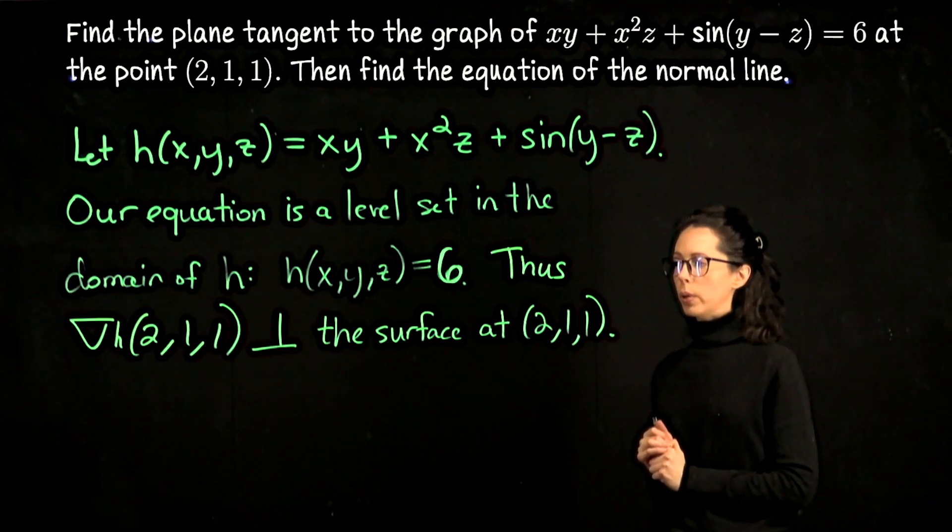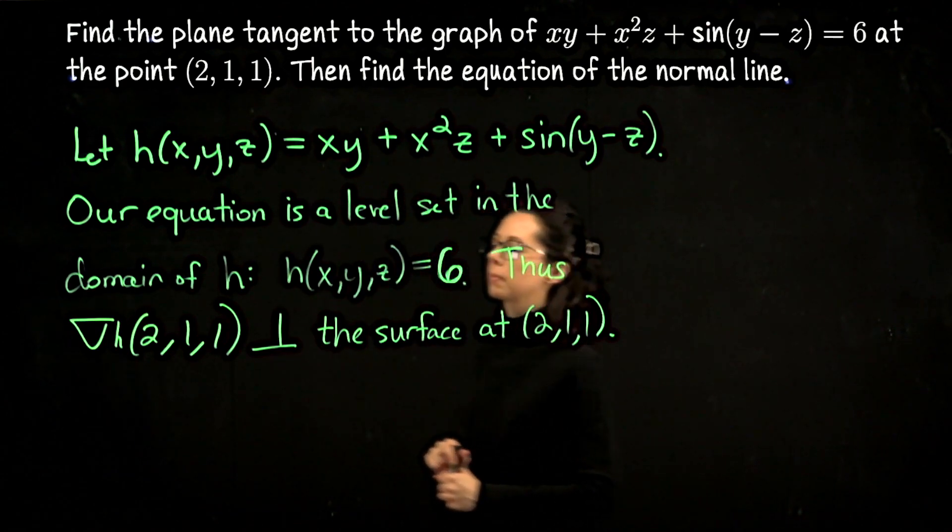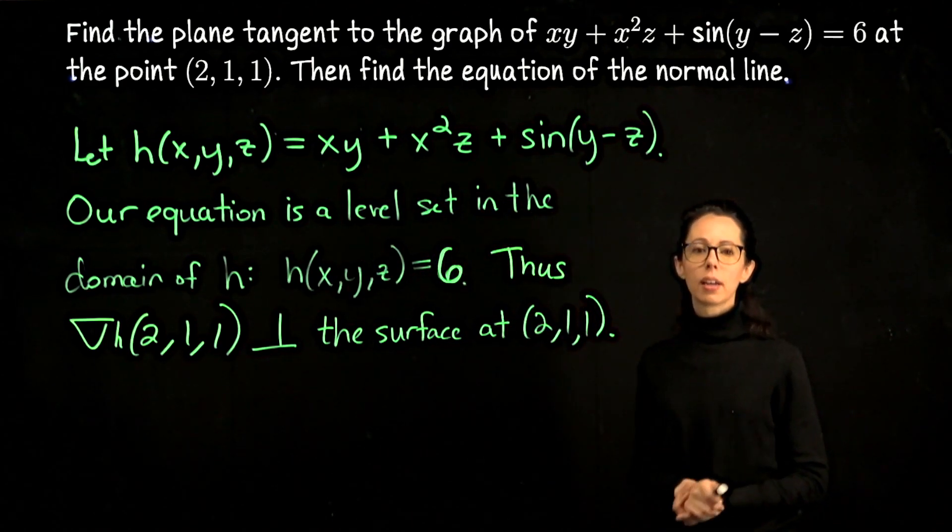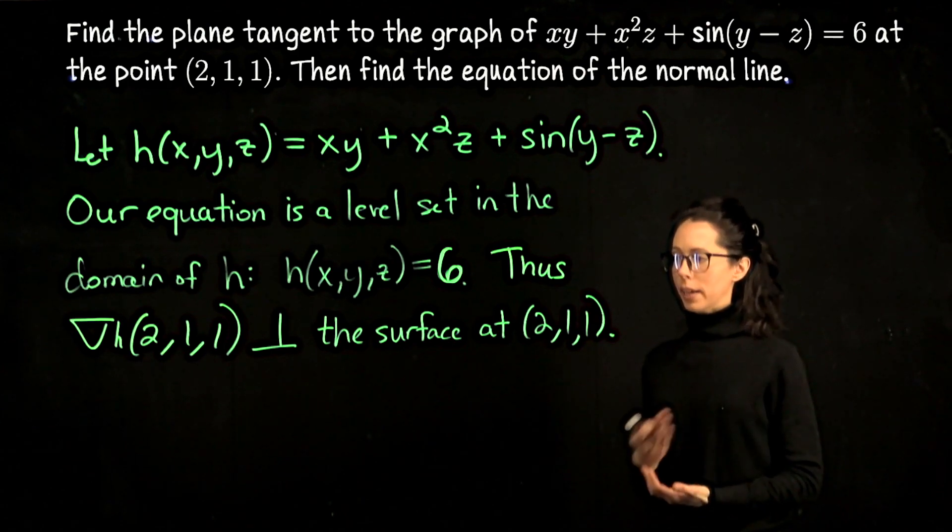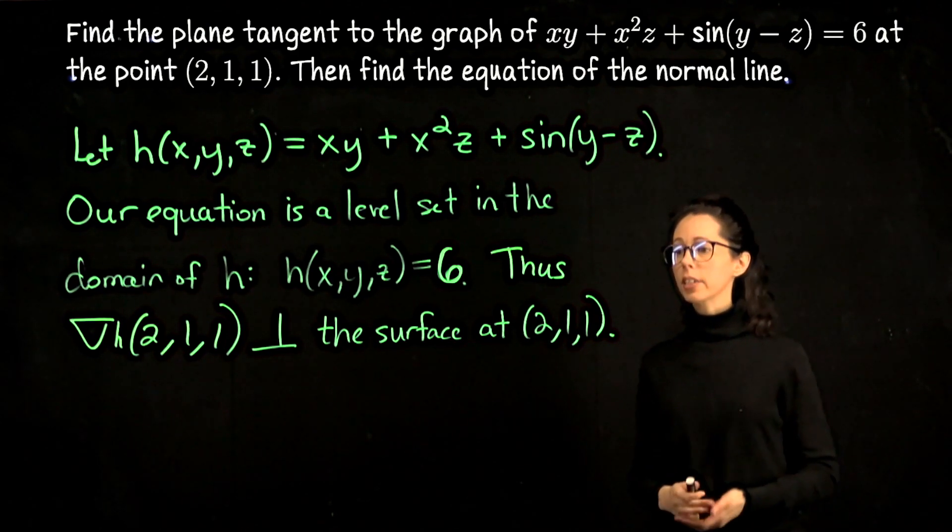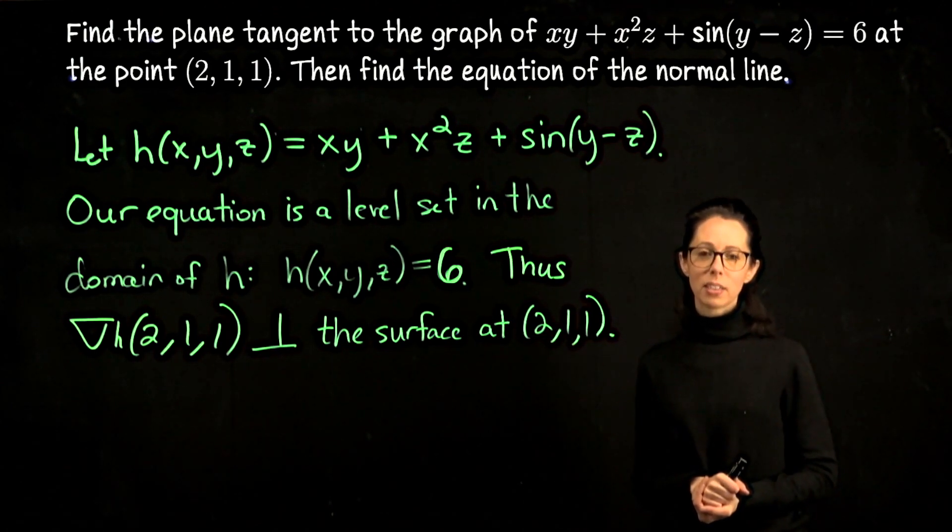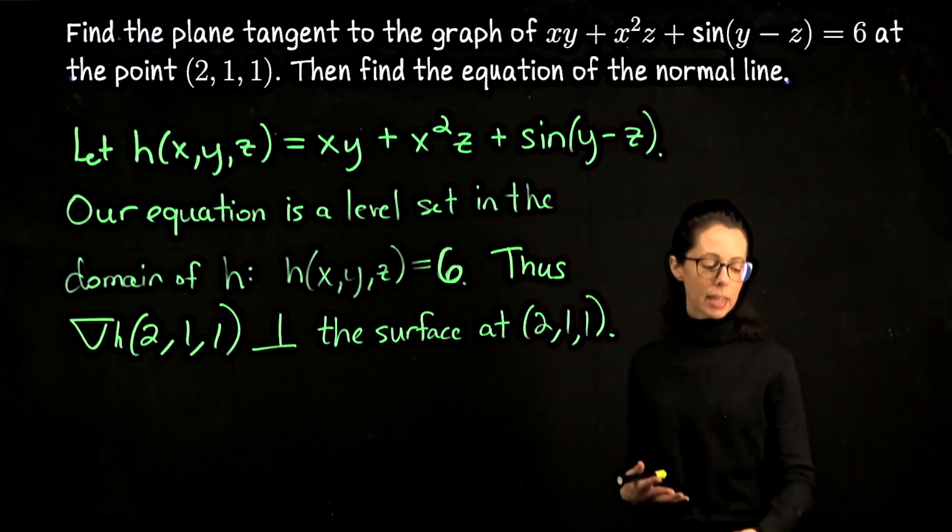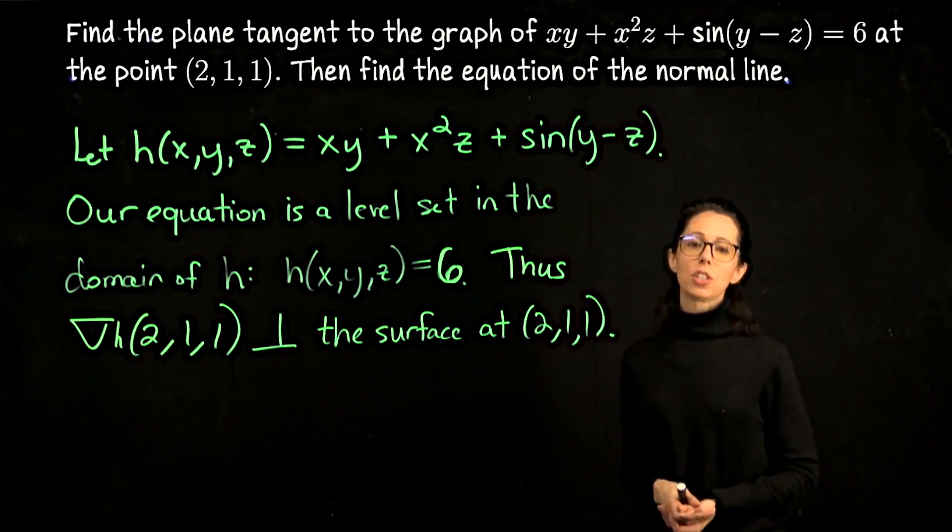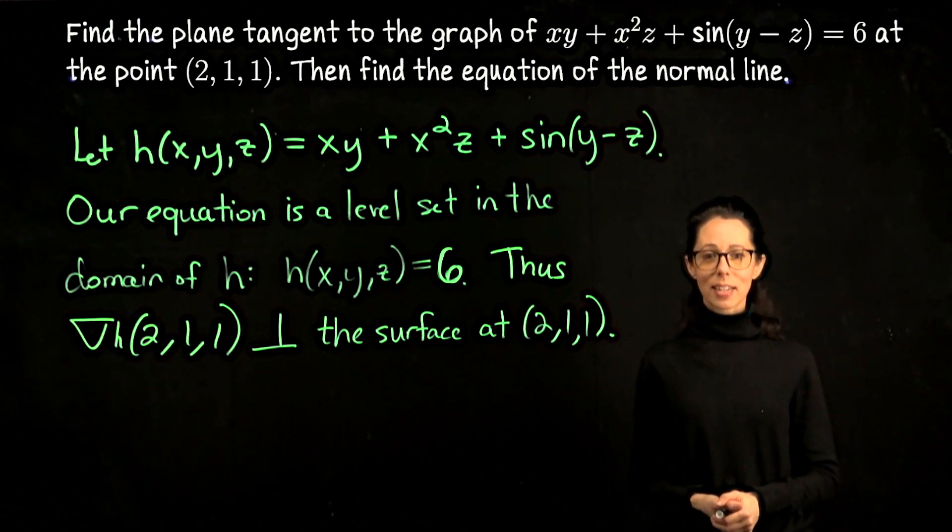That means that we need to find the gradient of h at (2,1,1). So I'm just going to do a vector of partial derivatives, plug in (2,1,1). That gives us the orthogonal vector to the plane we need. We have the orthogonal vector, we have a point on the plane. Then we will use the vector form for the tangent plane to write down the tangent plane, expand it, and end up with the general form for the plane. Let me pause for a moment if you'd like to catch up and digest this idea.